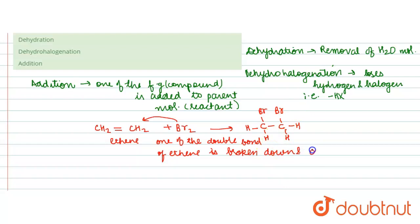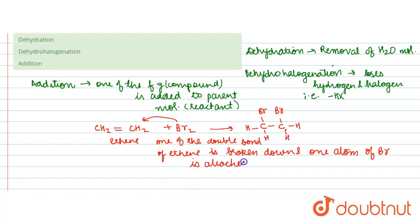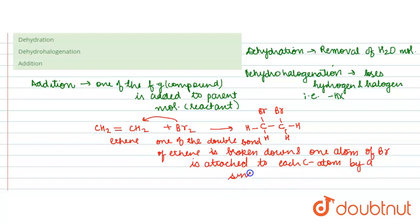One atom of bromine is attached to each of the carbon atoms by a single bond.